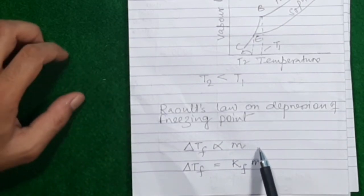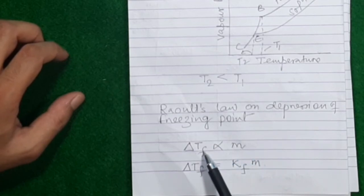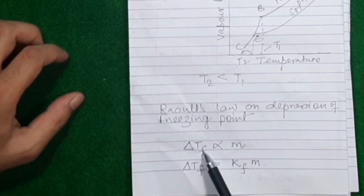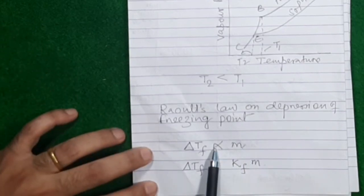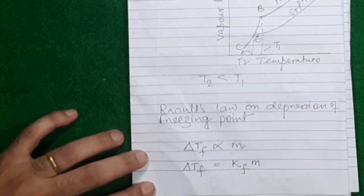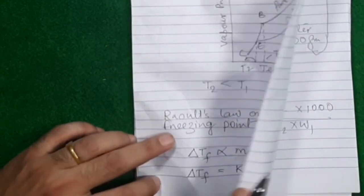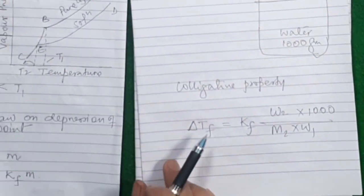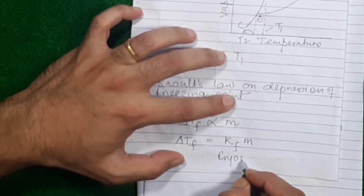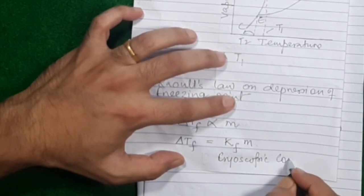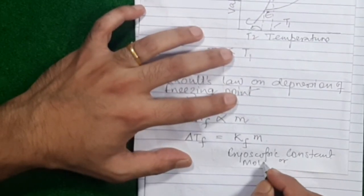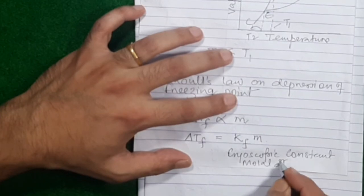For example, pure water freezes at 0 degrees and its solution freezes at minus 2 degrees. So delta Tf is 2 degrees — the amount by which the freezing point has gone down below 0. The amount by which the freezing point goes down is directly proportional to the molality. So if you have a high molality solution with lots of impurity, it will exhibit a huge depression in freezing point; if you add little impurity, depression will also be less.